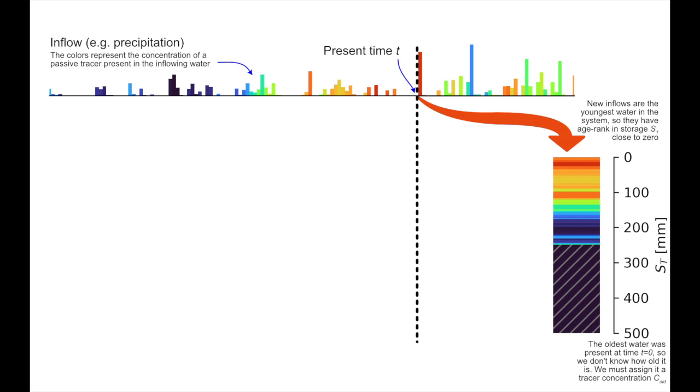Of course, there may be some water in the system whose age we don't know. This is the water that was in the system at the start of our simulation, and we have no information about how old it is. Nevertheless, we know that this old water contributes some of the outflow and some of the tracer we might be measuring. And so we need to assign it some concentration, c old.